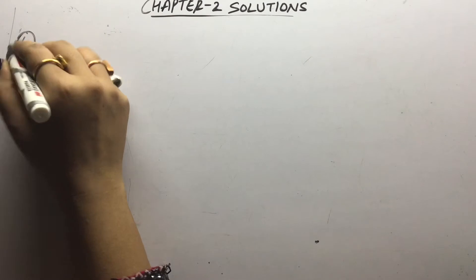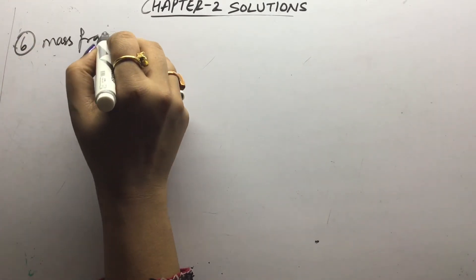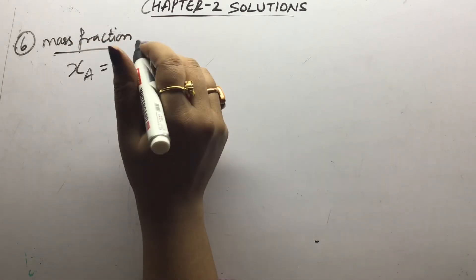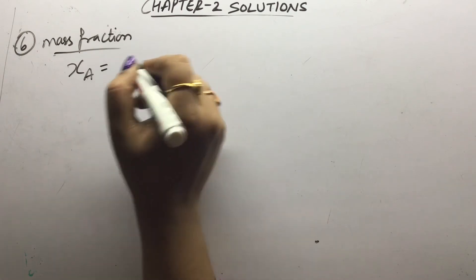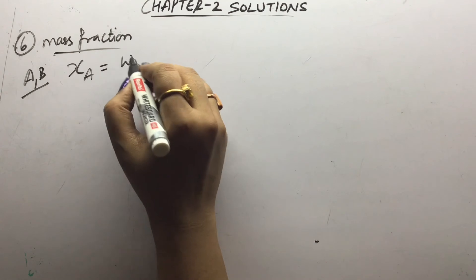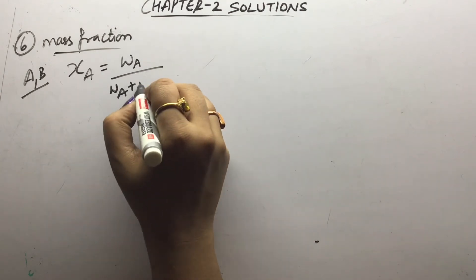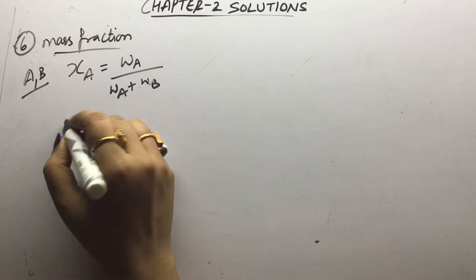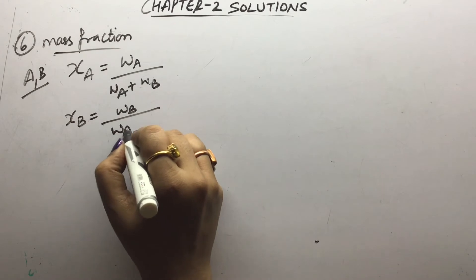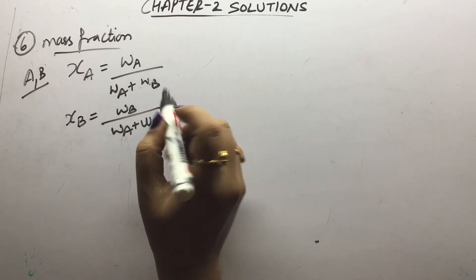Next is mass fraction, which is also shown by chi. For a binary solution with components A and B, the mass fraction of A is mass of A upon total mass of solution. Similarly, mass fraction of B is mass of B upon total mass of solution. We do not multiply by 100 because it is a fraction, not a percentage.